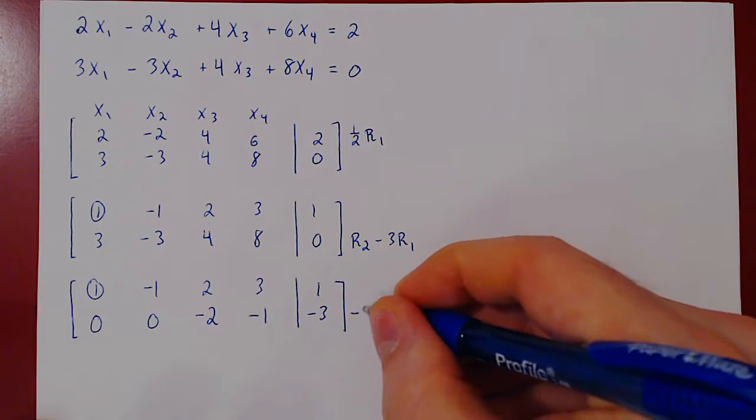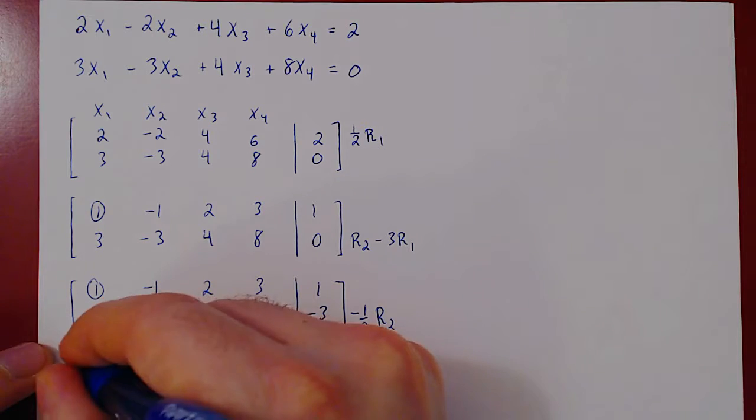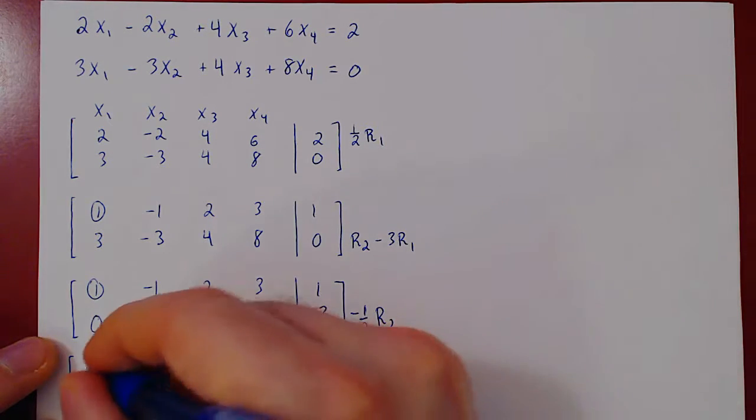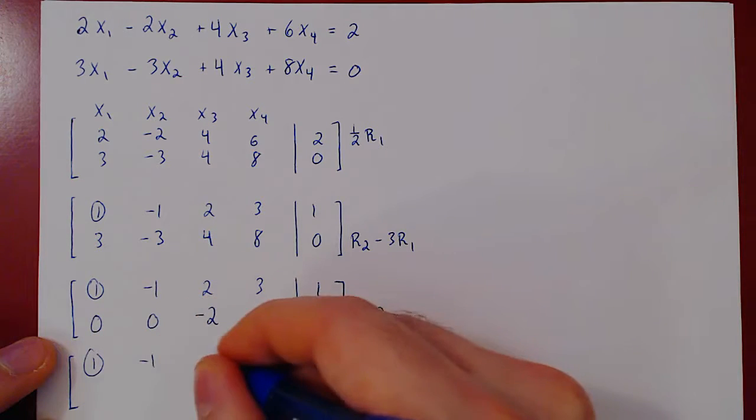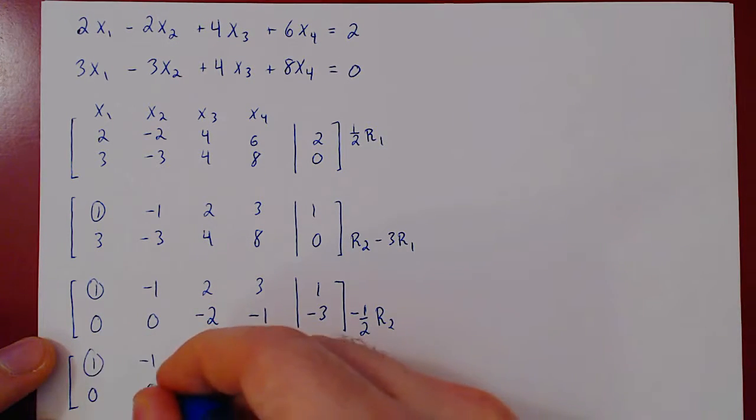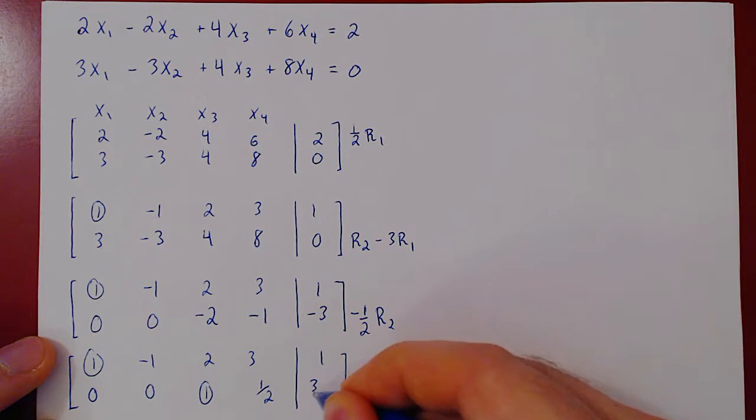So we do negative 1 half of row 2, and we obtain our second leading one this way. We copy row 1, multiply by negative 1 half, we have our second leading one, positive 1 half, positive 3 half.